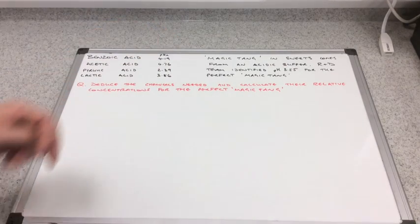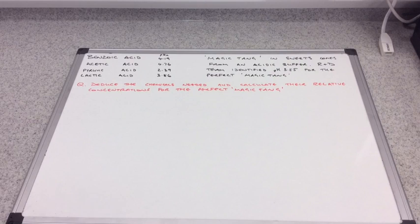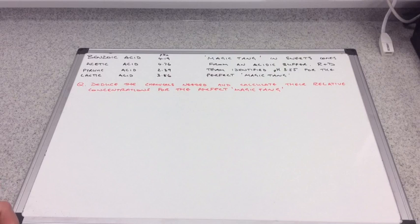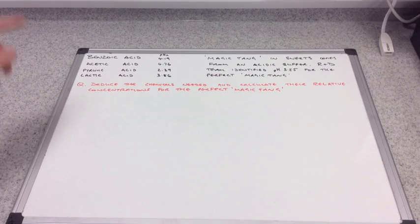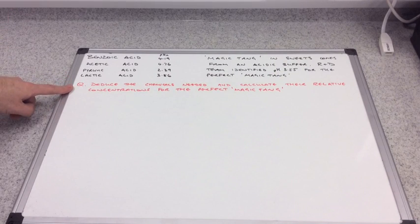You were also given the formulae of the acids because apart from benzoic acid you probably aren't familiar with the rest of them, especially their formulae. You were given some information about a process. You're told about this very weird thing called the magic tang in sweets. It comes from an acidic buffer, and a research and development team worked on this. They identified a pH of 3.55 for this buffer to create the perfect magic tang.